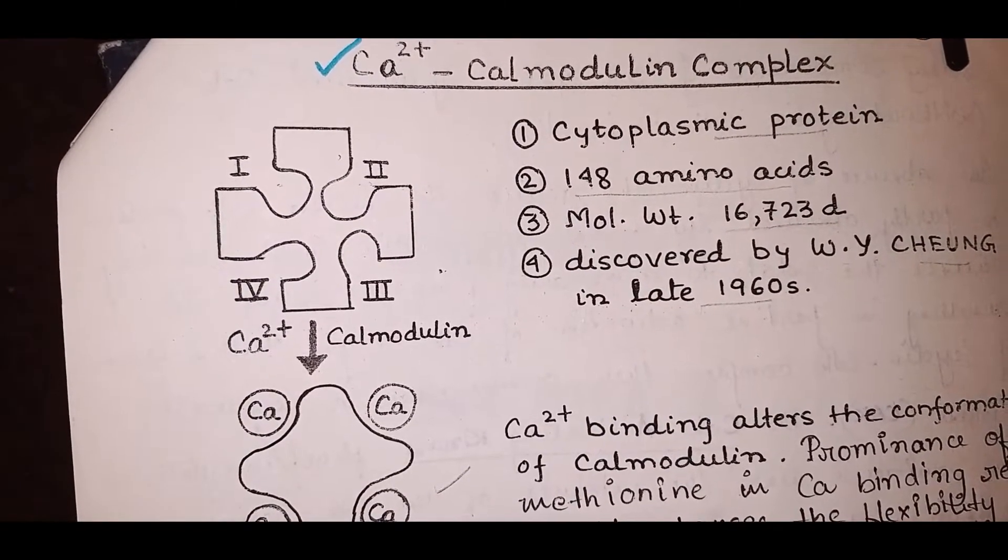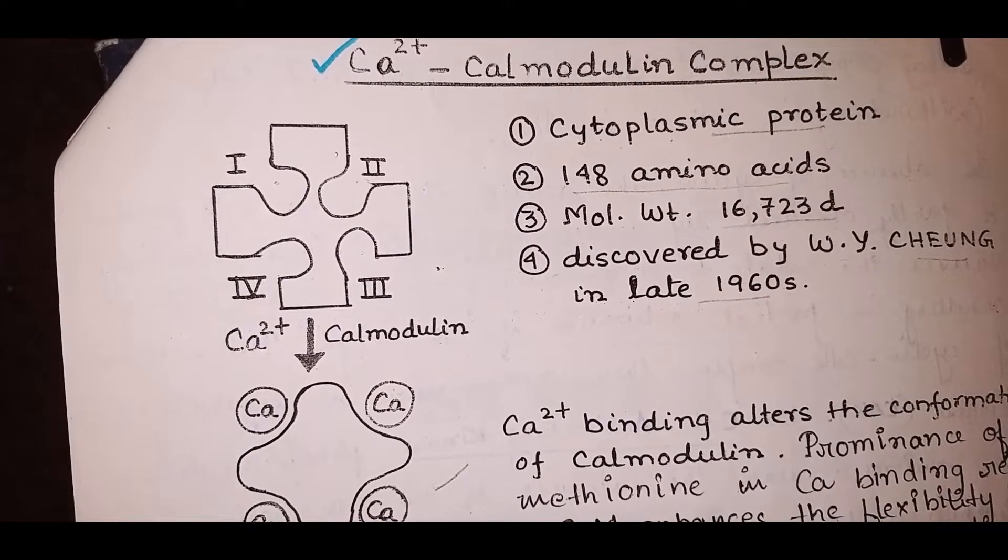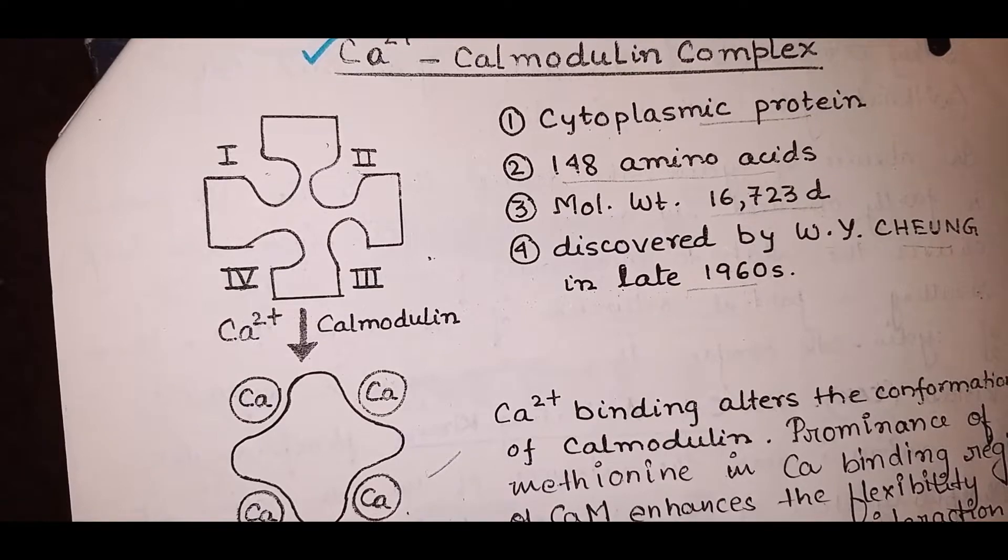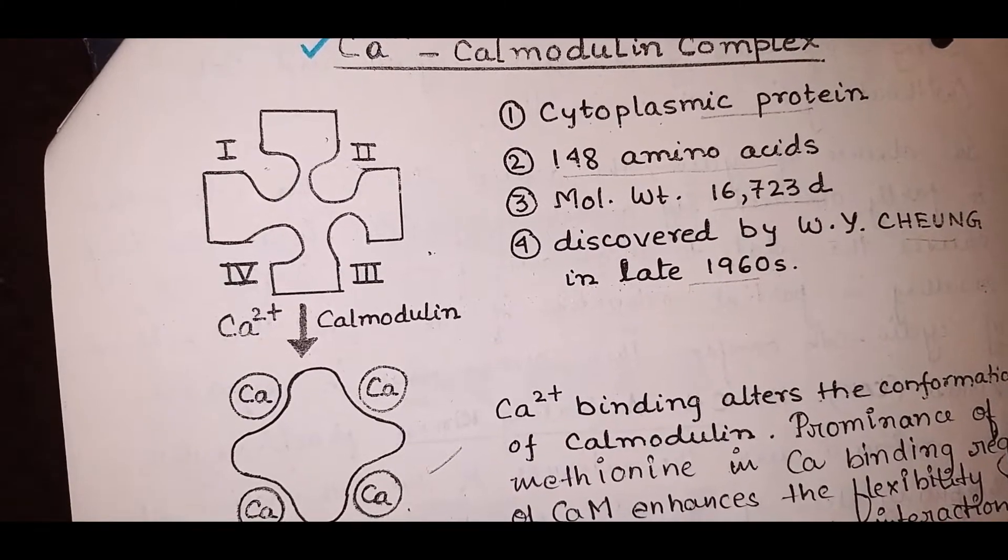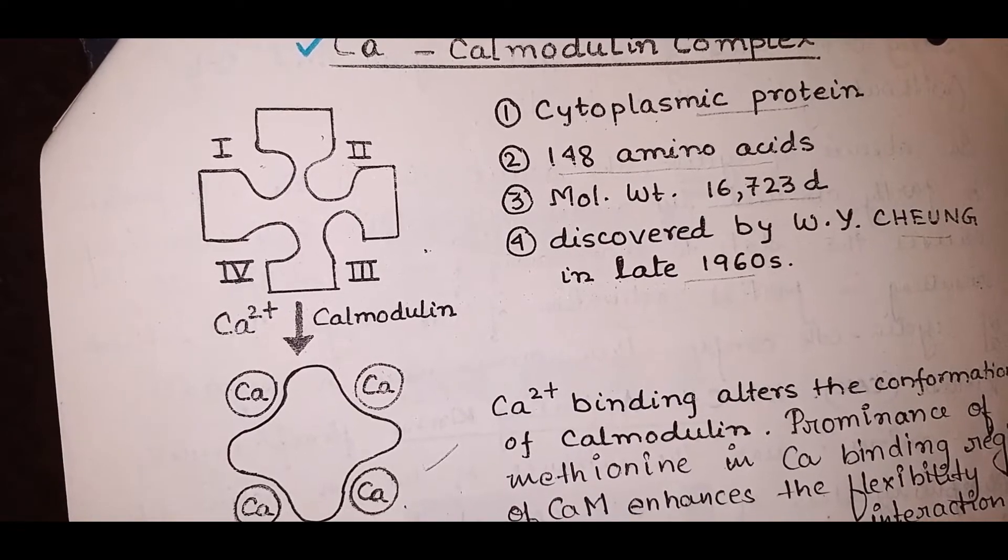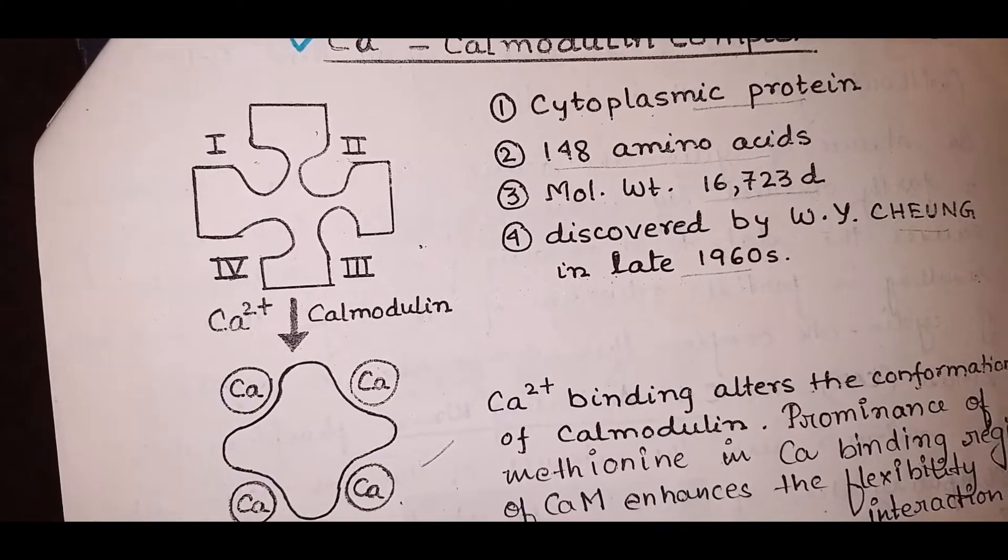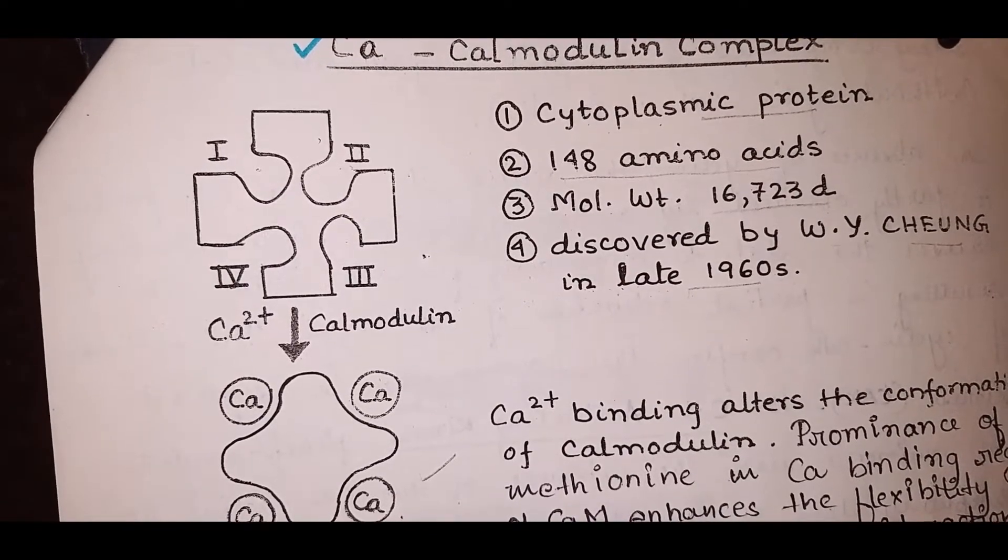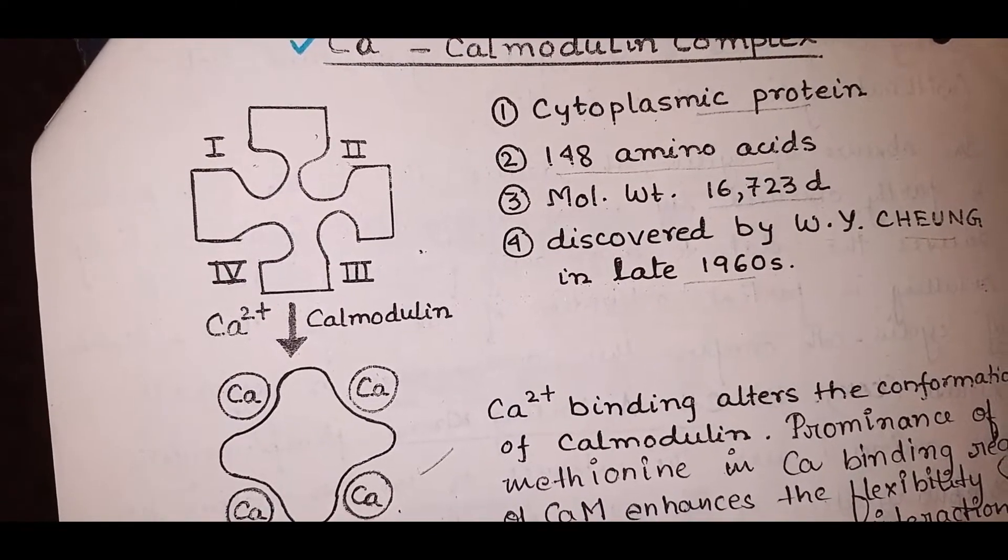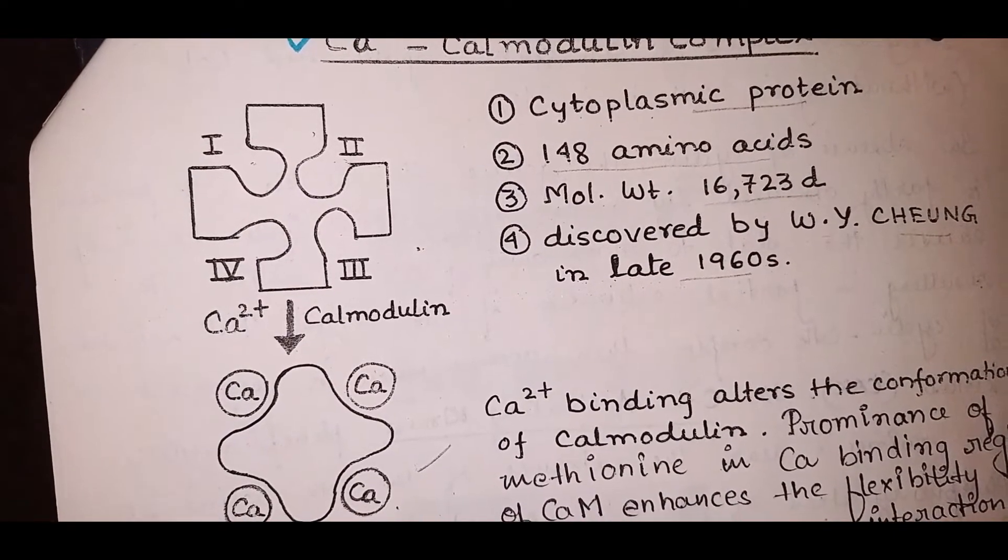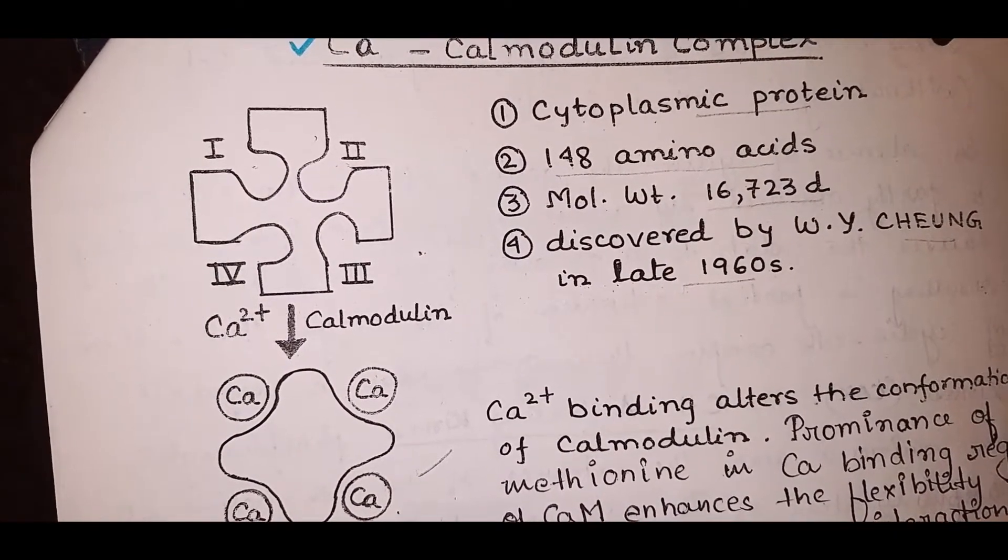Exogenous calcium as well as cytoplasmic calcium reduce stomatal aperture size by inhibiting potassium influx channels. The important calcium regulation of stomatal opening in the calcium signal transduction involves calmodulin, a calcium binding protein.